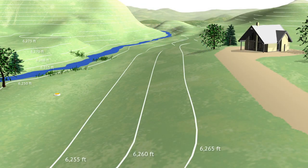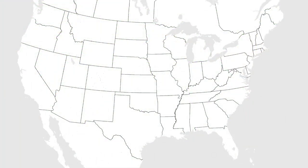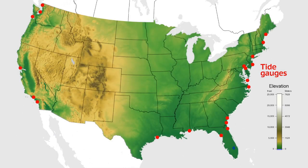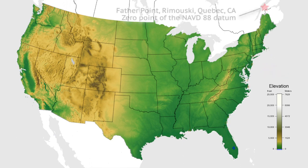Vertical datums are used to measure elevations and water depths. Sometimes the word height is used to refer to elevation information. Most vertical datums in North America use sea level as the basic reference plane from which we measure elevation changes. Because sea level varies along the coast for a variety of reasons, the idea of using multiple tide gauges to define the vertical datum was abandoned in 1988 in favor of using just one tide gauge.